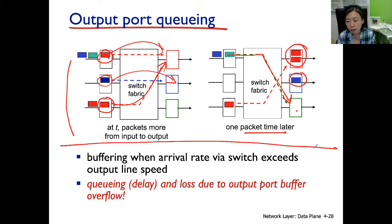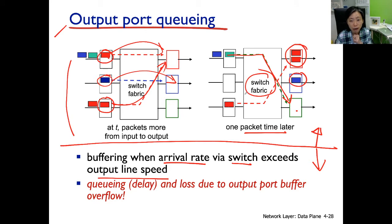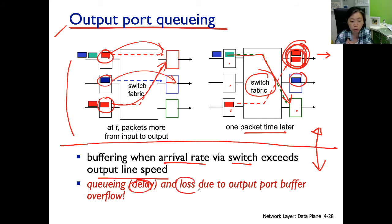That was the discussion on that special type of queuing. Now let's come back to buffer management. We also need buffer management at the output port because the arrival rate through the fabric could exceed the output line speed. In a non-output port contention router, the switch is super fast and packets can come in very quickly — for example, three red packets arriving at once. If the line speed can't keep up, the buffer fills up quickly, causing long delays and potential packet loss.